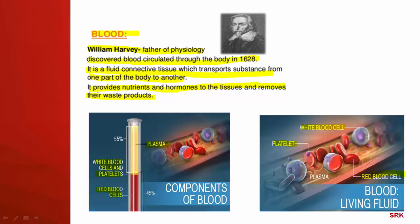In the blood, 55% is contributed by plasma, and the remaining 45% is collectively represented by the three types of cells. In Kannada: RBCs are called Kempurakthakanagaloo, WBCs are called Bilirakthakanagaloo, and platelets are called Ratthadatattagaloo. Plasma and these three types of cells together represent blood, which is the fluid connective tissue.